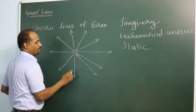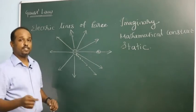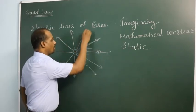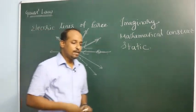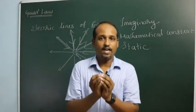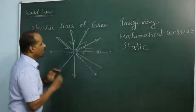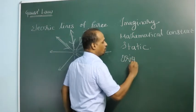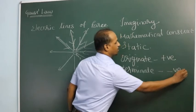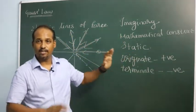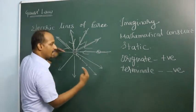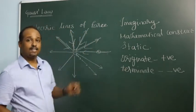What if the charge is negative? If you place a positive charge near a negative charge — because the condition is you draw lines of force using a positive charge — it will be attracted by the negative charge. So all the lines of force will come toward the negative charge, radially inward. Basically, lines of force originate from a positive charge and terminate at a negative charge.